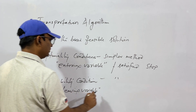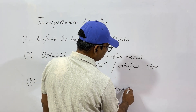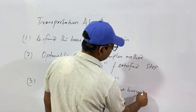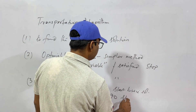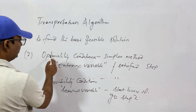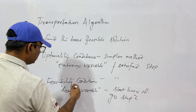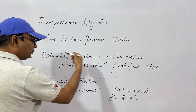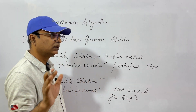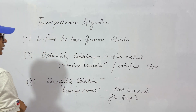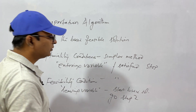You start with the basic solution, then go to step 2 again — optimality test, entering variable. If it is satisfied, stop; else repeat. You keep on doing this until your optimality condition is satisfied. This is the transportation algorithm. We will deal with it step by step, so do not worry.